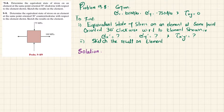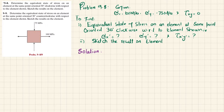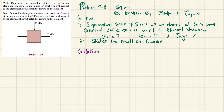Welcome back. Problem 9-8: determine the equivalent state of stress on an element at the same point oriented 30 degrees clockwise with respect to the element shown, and sketch the result on the element. From the figure, sigma x is given as 100 MPa, sigma y is compressive at minus 75 MPa, and there is no shear stress, so tau x y is equal to 0.